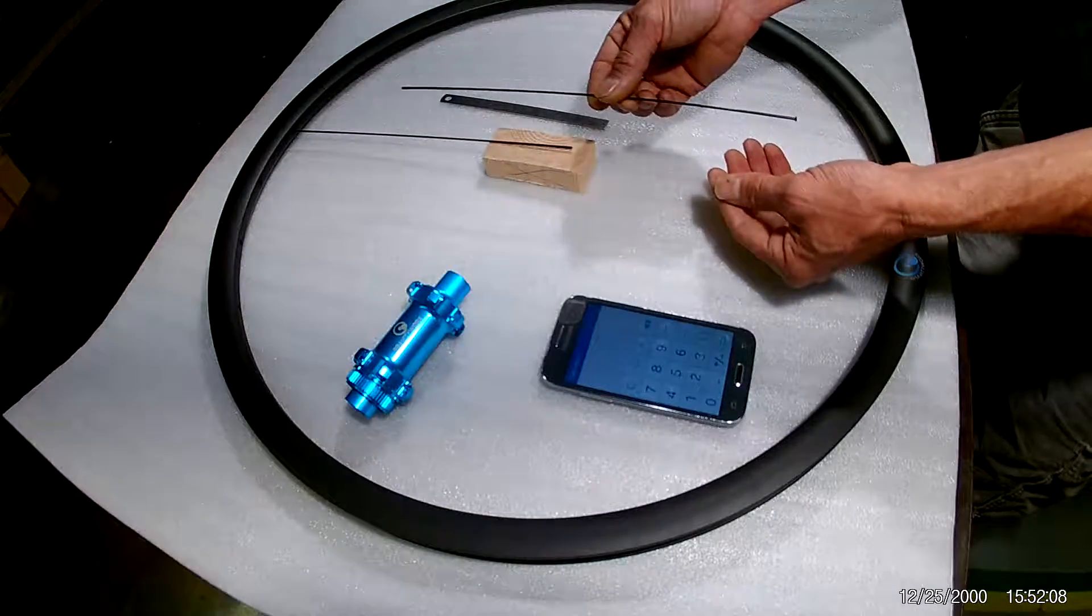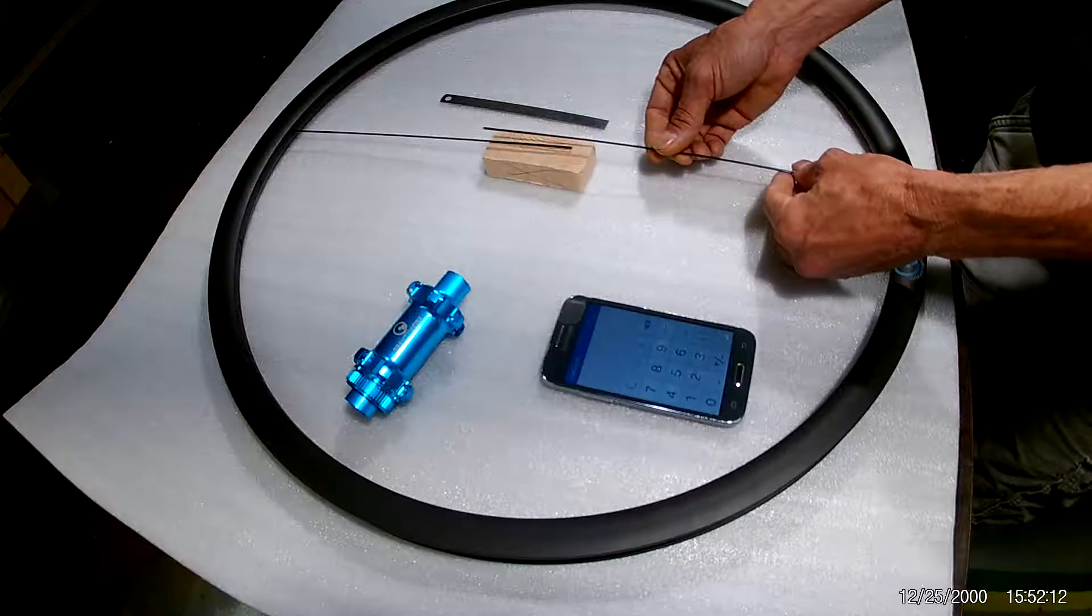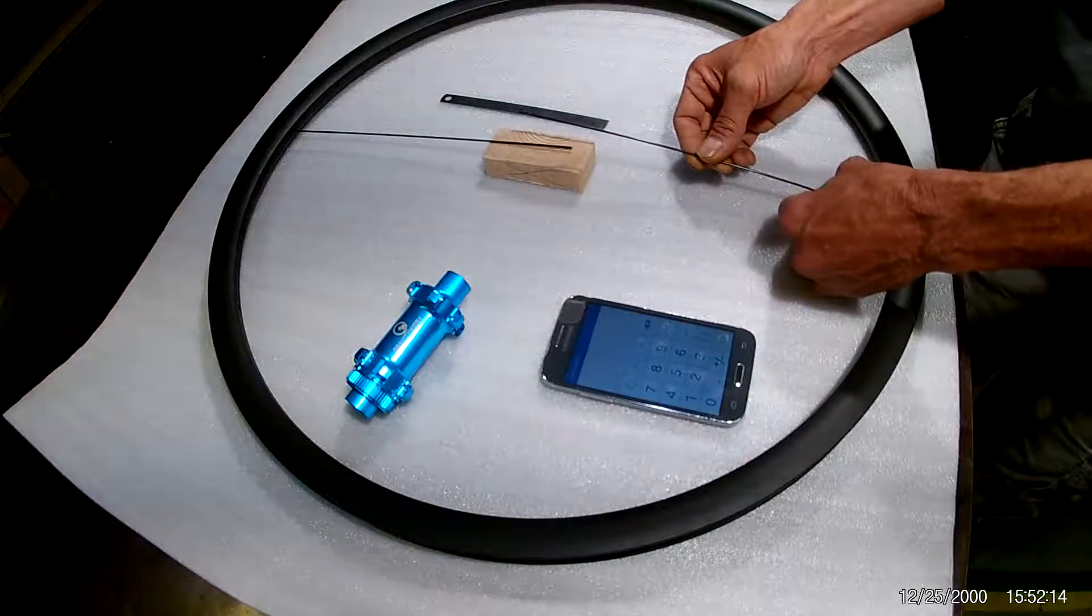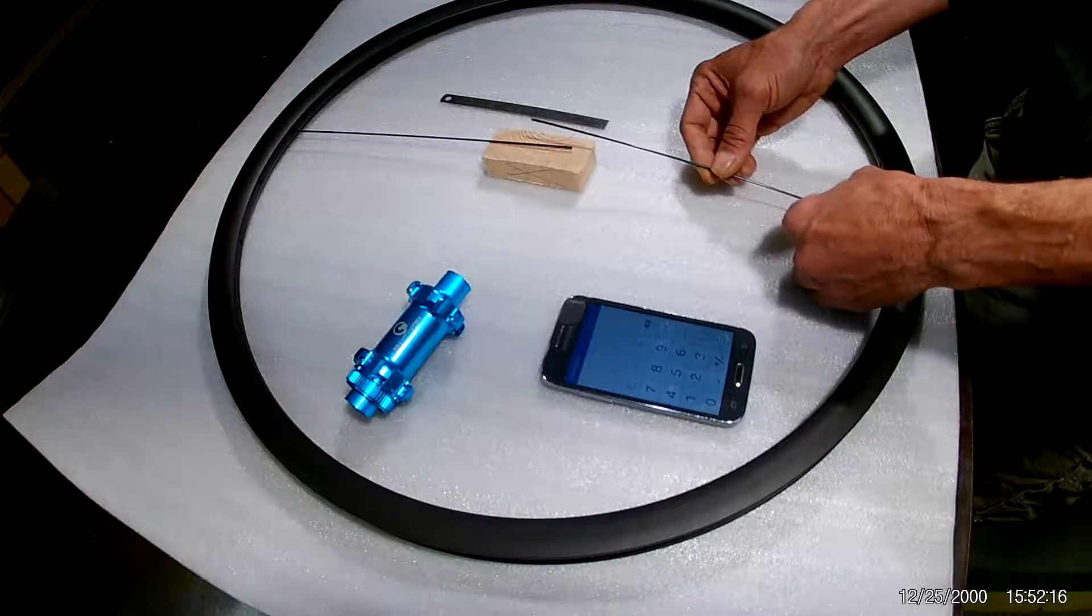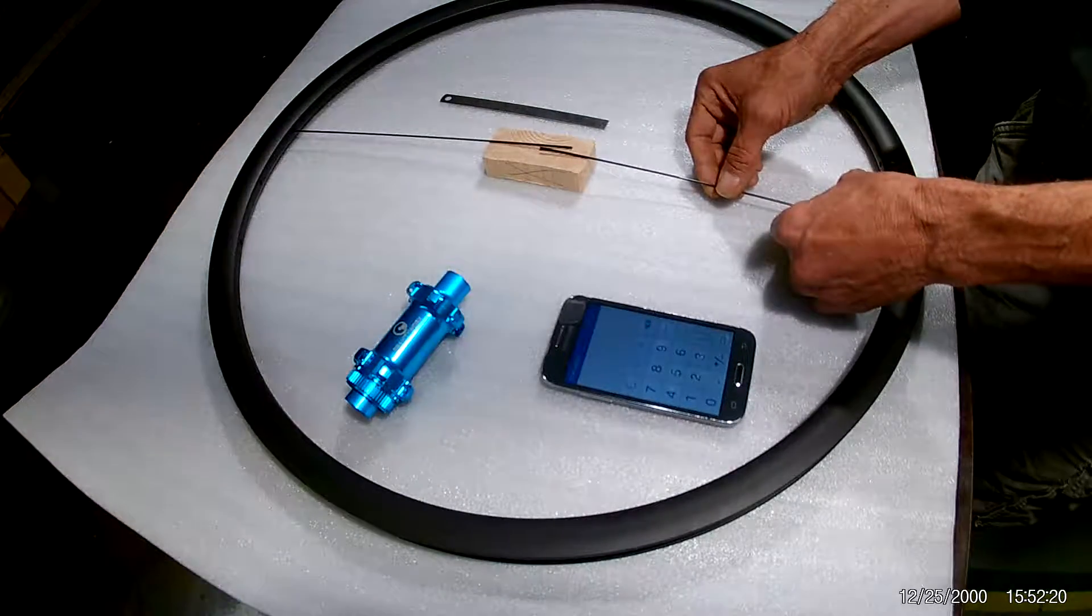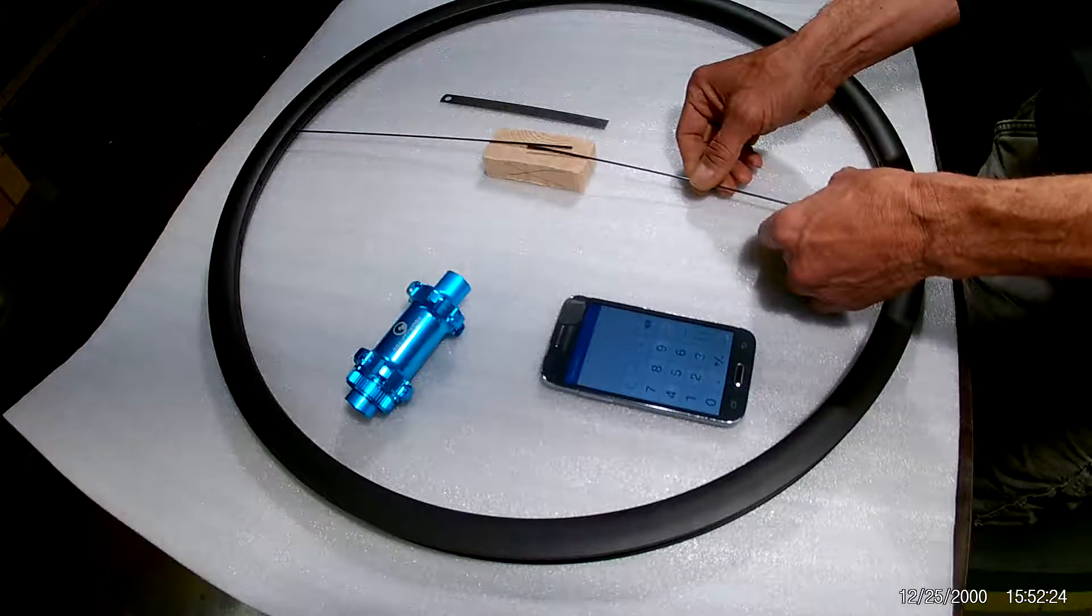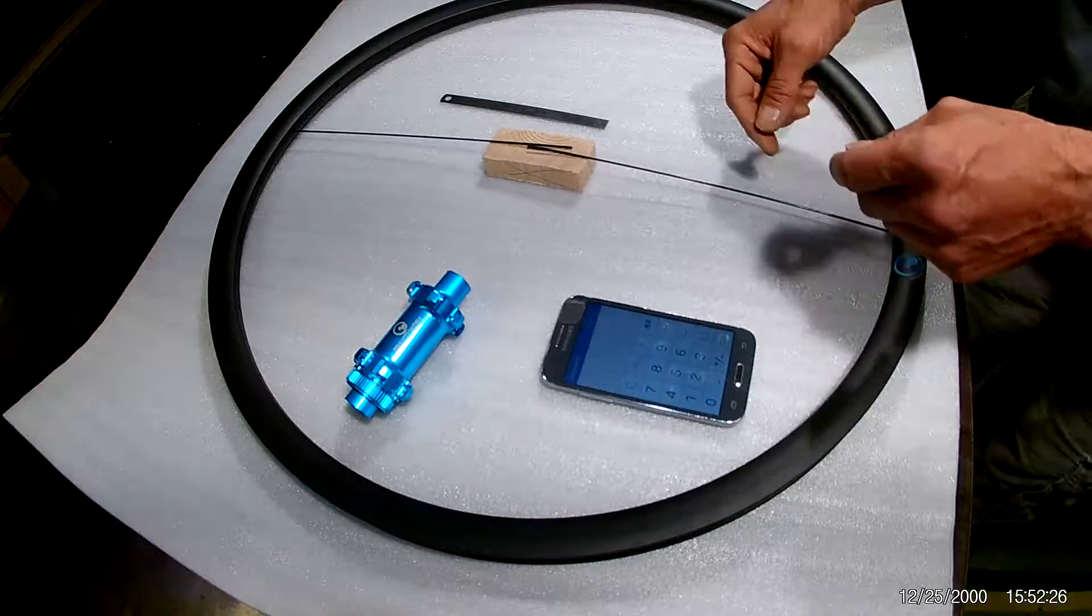Now you're going to do the same thing with the second spoke in a spoke hole diametrically opposite the first one. So, we're going to insert the spoke head, lay the rest of the spoke on the wood block, pull towards the center until you feel the spoke head touch the inside of the rim.